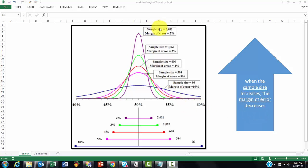You see that here. The sample size goes down from 2,000 to 96, and the margin of error increases from 2% to 10%. How can you calculate them?